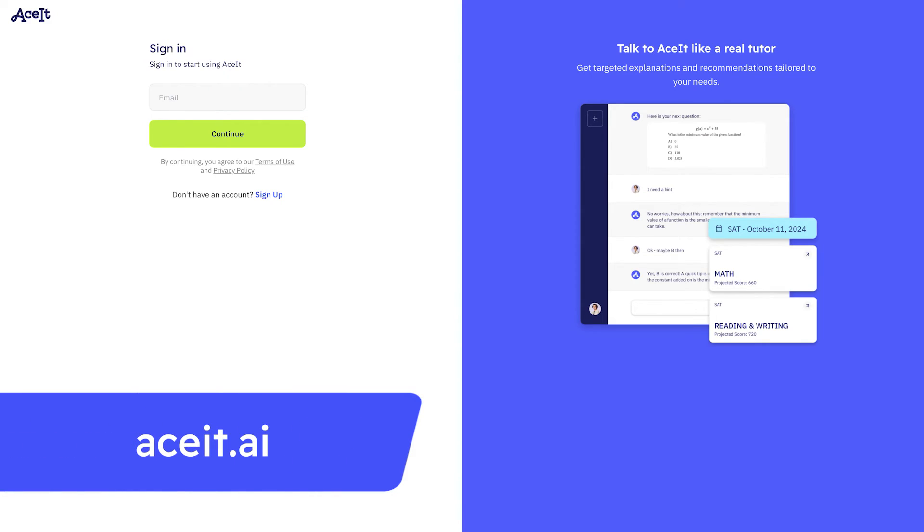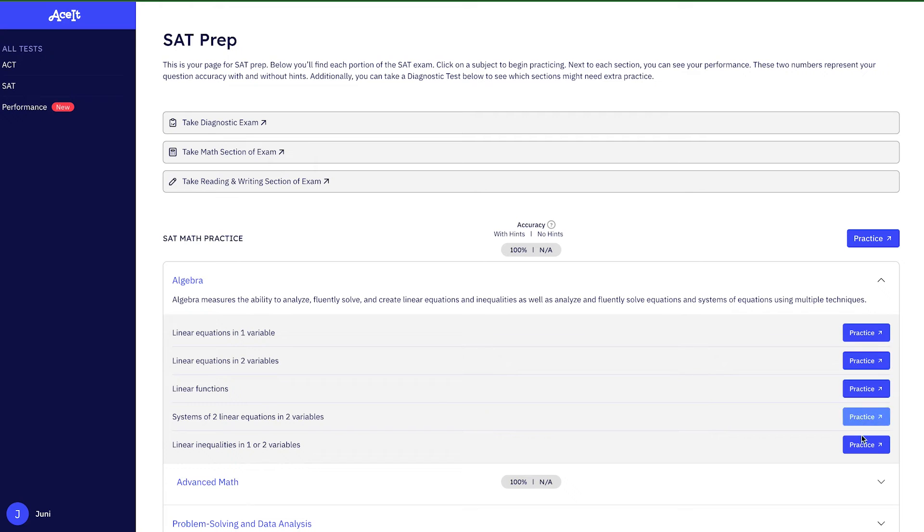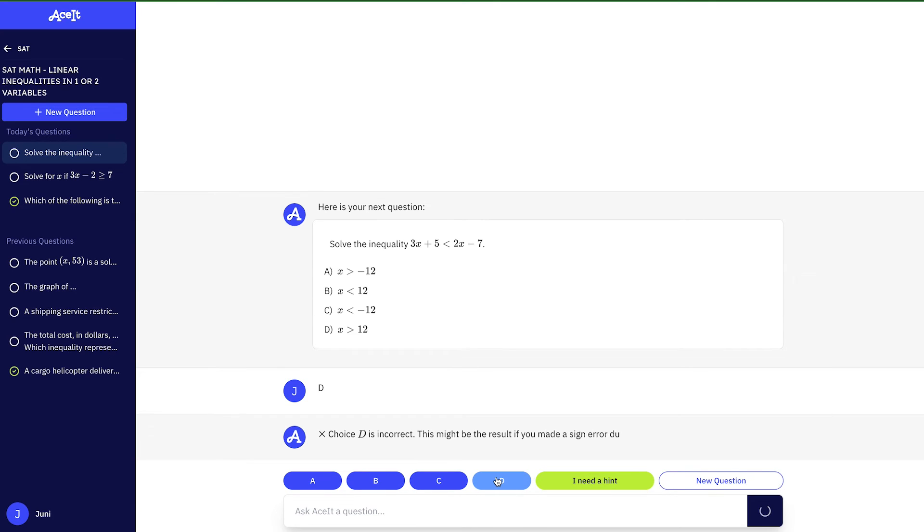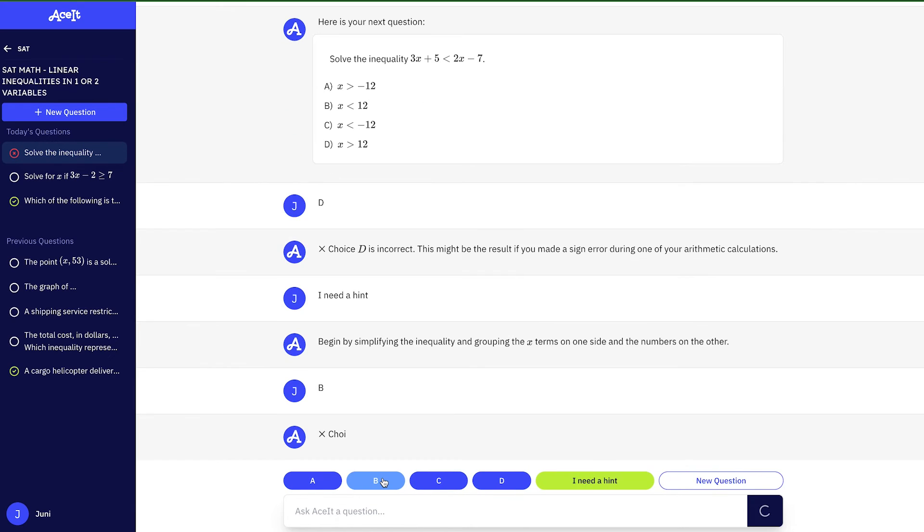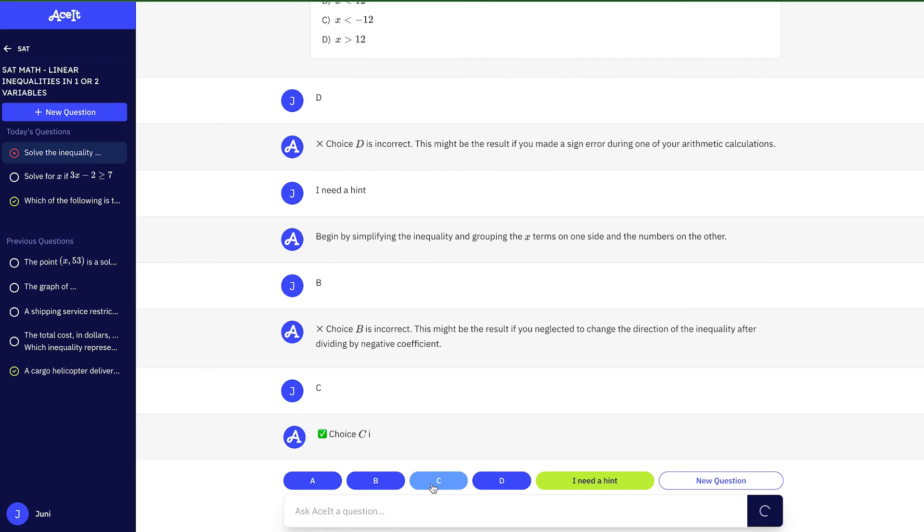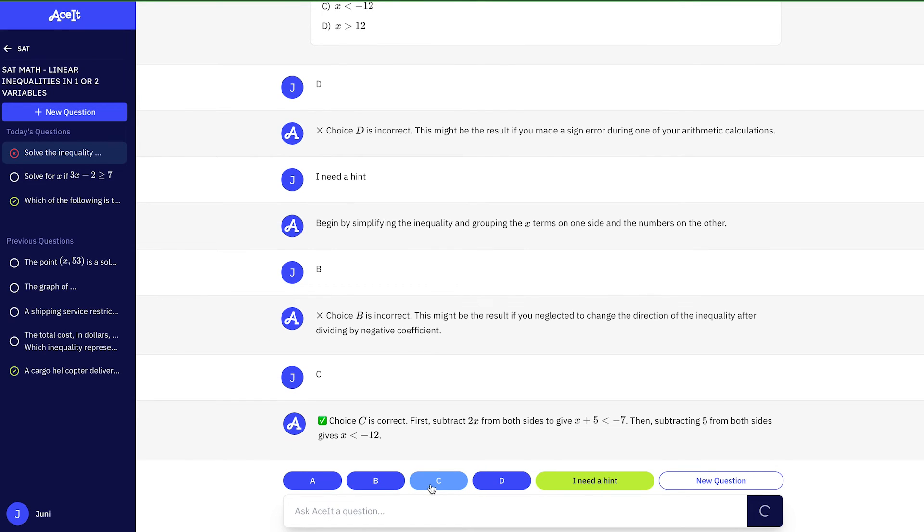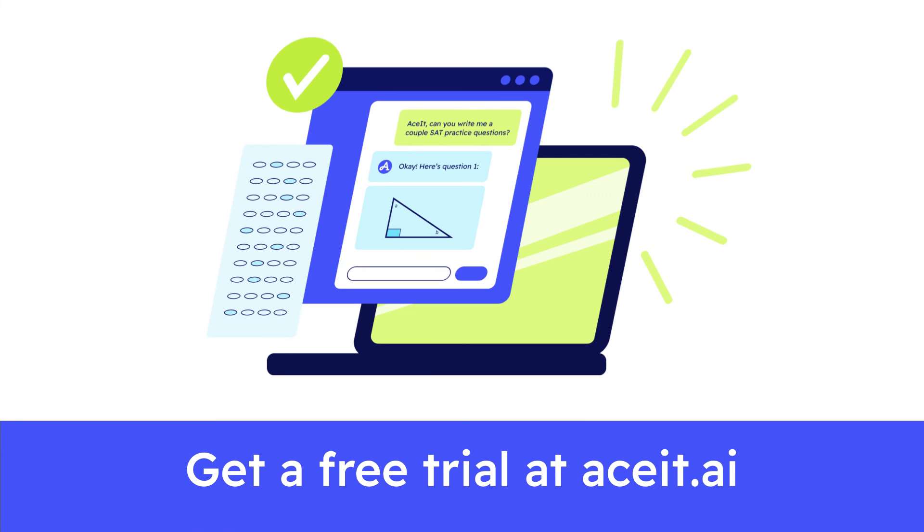For more practice problems like the ones in this video and access to a 24-7 online practice tool, check out AceIt at the link below. AceIt is the ultimate study tool for the SATs and ACTs created by Junior Learning, an award-winning educational tech company that has helped thousands of students take their learning to the next level. Get a free trial when you use the link in the description. Until next time!